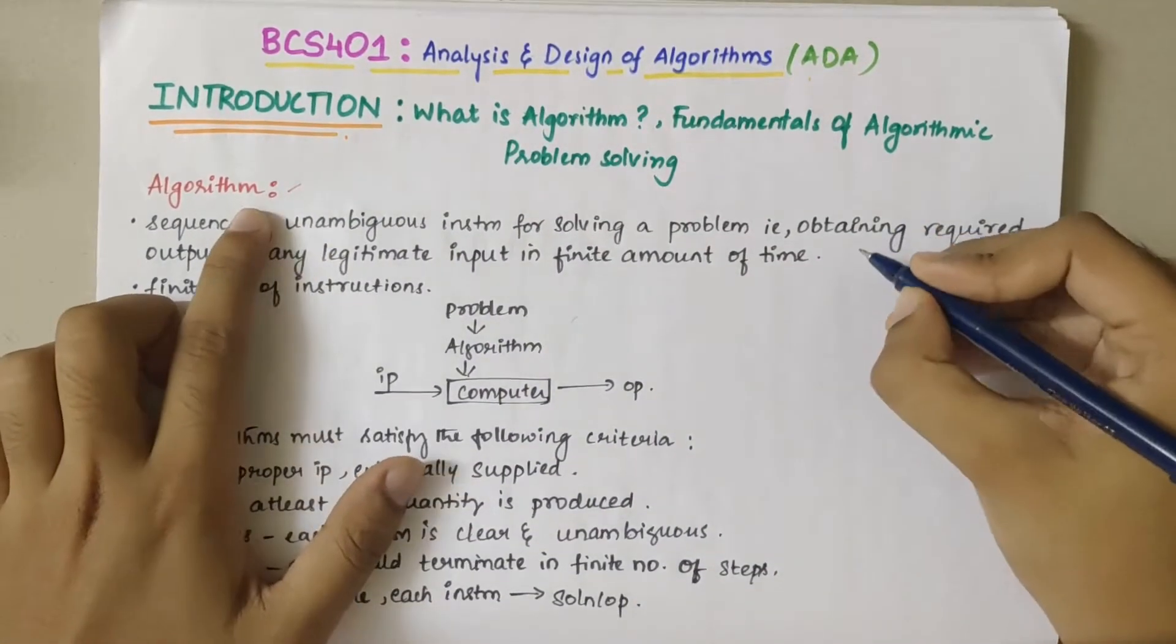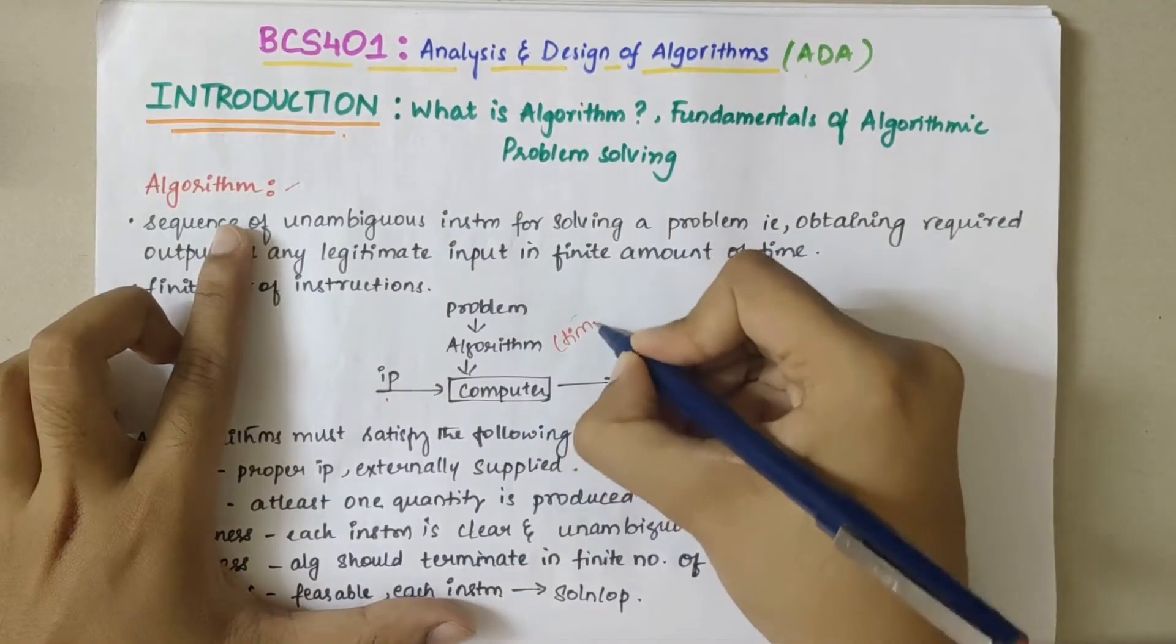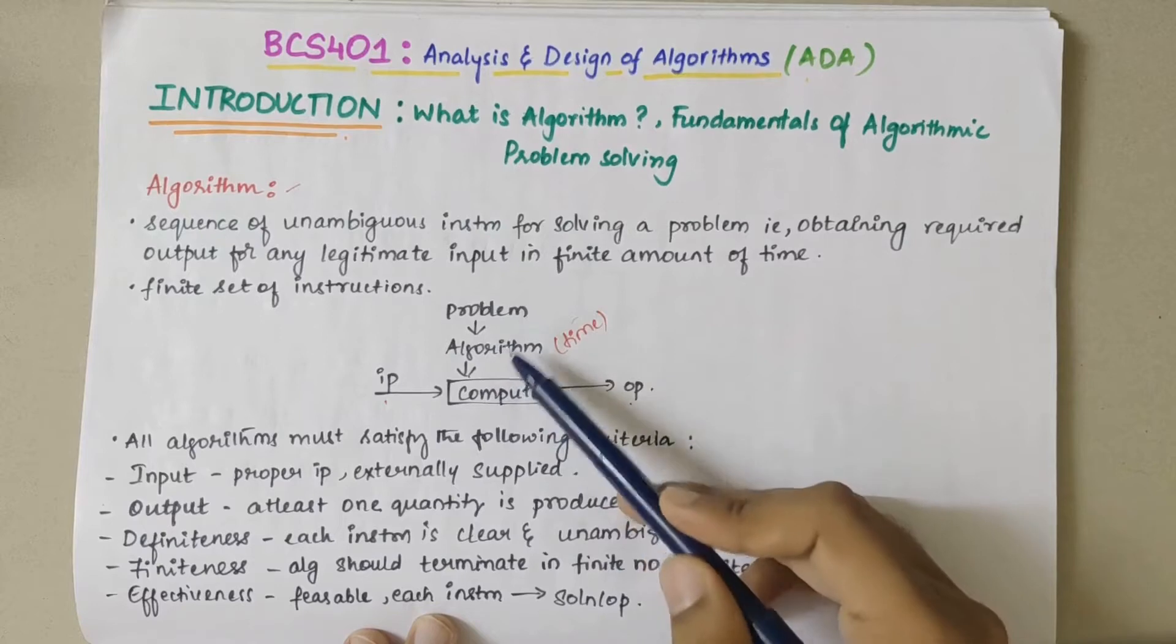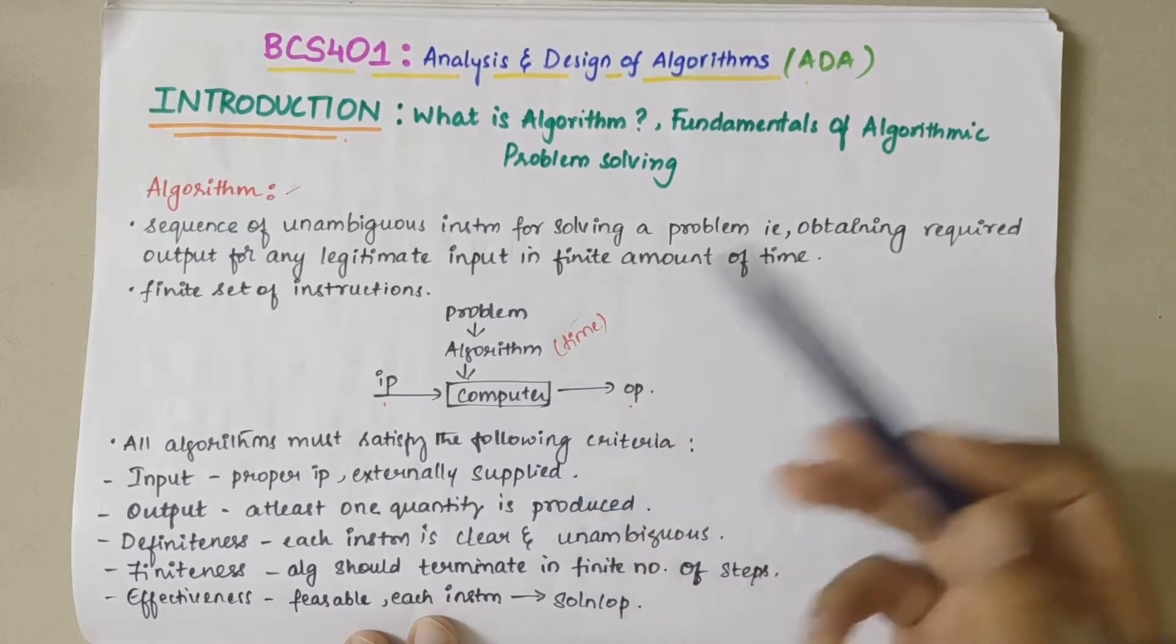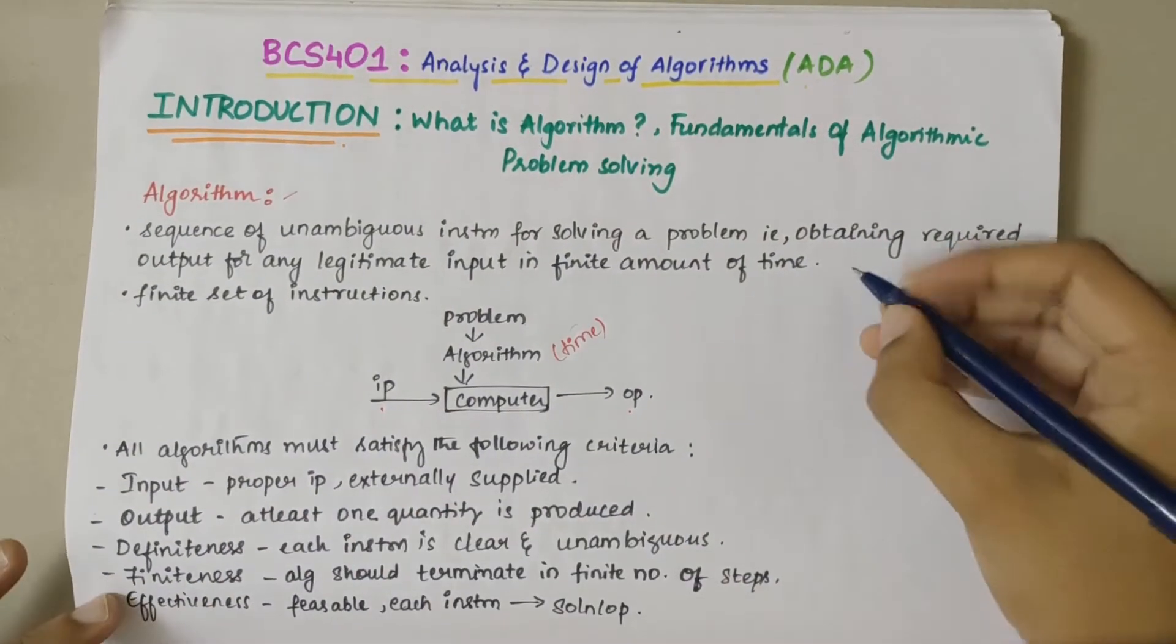An algorithm basically has an input, has an output with specified time. We design an algorithm initially. We take a problem, from that problem we write the algorithm, and that is further fed to the computer as a program. Algorithm can be explained as a finite set of instructions or it is also called the skeleton of the actual program.